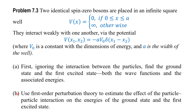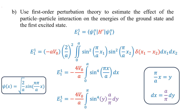Now we will solve part B. In my previous lecture we solved section A; now section B asks us to use first-order perturbation theory to estimate the effect of the particle–particle interaction on the energies of the ground state and first excited state. By definition, the first-order perturbed energy of the ground state E₁¹ is the expectation value of the perturbed Hamiltonian on the unperturbed ground-state wave function.